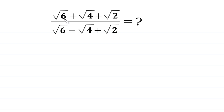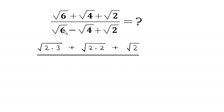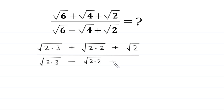The square root of 6 can be written as square root of 2 times 3, the square root of 4 can be written as square root of 2 times 2, plus square root of 2, divided by the square root of 6 written as square root of 2 times 3, minus square root of 4 written as square root of 2 times 2, plus square root of 2.